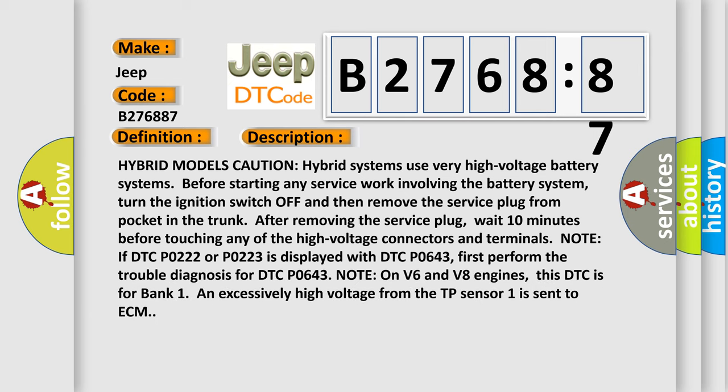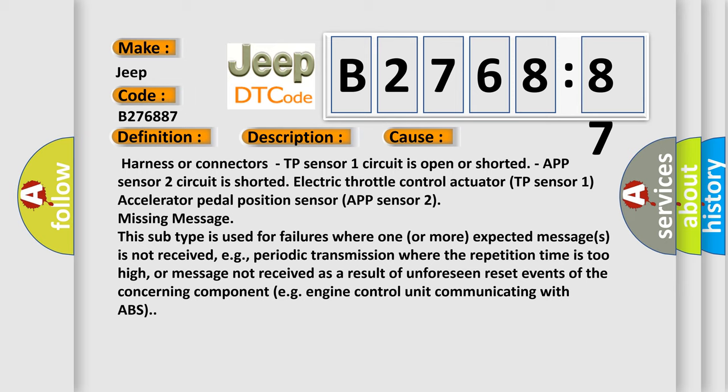And now this is a short description of this DTC code. Hybrid models caution: hybrid systems use very high voltage battery systems. Before starting any service work involving the battery system, turn the ignition switch off and then remove the service plug from pocket in the trunk. After removing the service plug, wait 10 minutes before touching any of the high voltage connectors and terminals. Note: if DTC P0222 or P0223 is displayed with DTC P0643, first perform the trouble diagnosis for DTC P0643. Note: on V6 and V8 engines, this DTC is for bank one and excessively high voltage from the TP sensor one is sent to ECM.